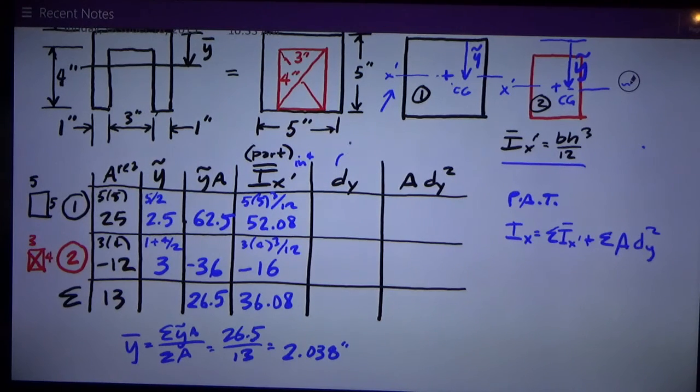So dy for these things is the distance from the centroid of the shape to the centroid of the area, which is y tilde, the little part and piece centroid. So it's just the y-bar 2.038 minus the y tilde 2.5, so that's negative 0.462. For the red negative rectangle it's 2.038 minus 3, negative 0.962.